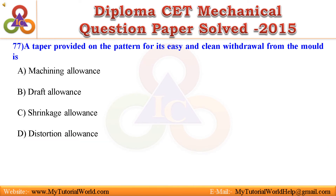Question 77. A taper provided on the pattern for its easy and clean withdrawal from the mold is: A. Machining Allowance, B. Draft Allowance, C. Shrinkage Allowance, D. Distortion Allowance. Answer is Draft Allowance.